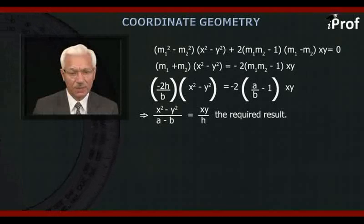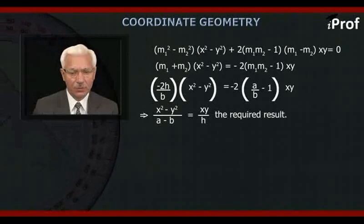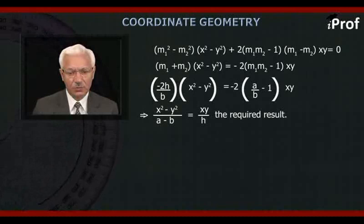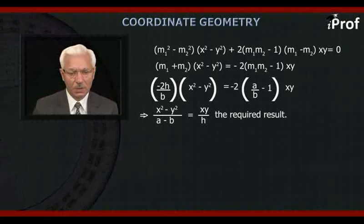Cancelling (m₁ − m₂), we get (m₁ + m₂)(x² − y²) = −2(m₁m₂ − 1)xy. Substituting m₁ + m₂ = −2h/b and m₁m₂ = a/b, we get −2h/b · (x² − y²) = −2(a/b − 1)xy, which gives (x² − y²)/(a − b) = xy/h, the required result.